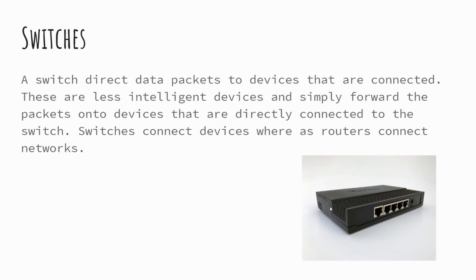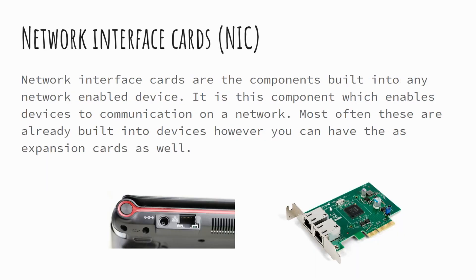Switches have a slightly different job, though there are some similarities to routers. A switch ultimately directs packets between devices connected to it. On the back of a switch you'll see a number of Ethernet ports — devices plugged in can communicate directly with each other. The switch is like a postman who takes a letter and passes it to its recipient, just receiving and passing along data. Remember: the router transfers data between networks; the switch transfers data between devices.